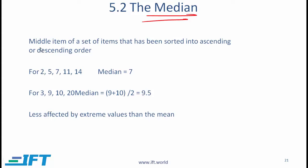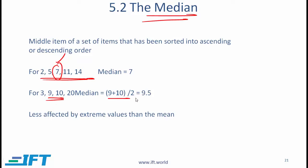The median is the middle item of a set of items that has been sorted into ascending order. If you have an odd number of items, this is straightforward — the median is simply the middle number. If you have an even number of items, you take the middle two numbers — in this case 9 and 10 — and take their average.